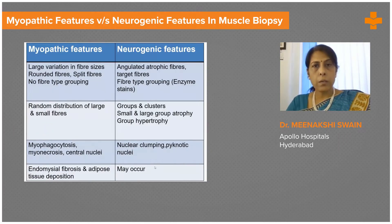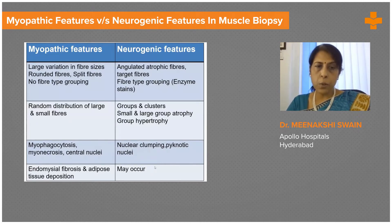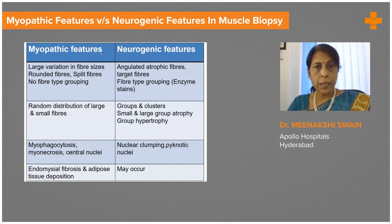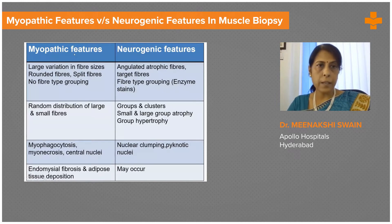Before we embark on trying to make a diagnosis on muscle biopsy, it's very important to understand that myopathic features are different from neurogenic features. This is what I'm going to repeatedly emphasize in the next few slides, so I would like you to pay attention. Myopathic features mean primary muscle diseases, whereas neurogenic features arise when the nerve supplying the muscle has been cut off.